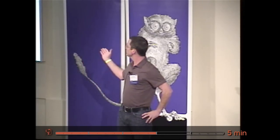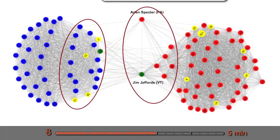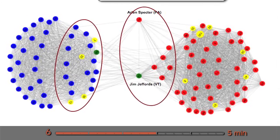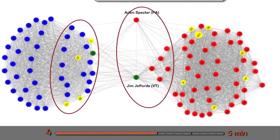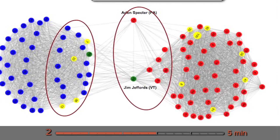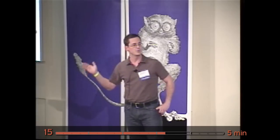On the Republican side, you see a fairly large and cohesive core, but some people splitting off. So those people splitting off are Arlen Specter and Jim Jeffords, who will actually both change parties subsequently, which is kind of an interesting thing that this reveals - the data reveals.